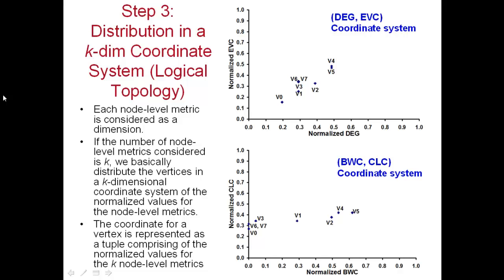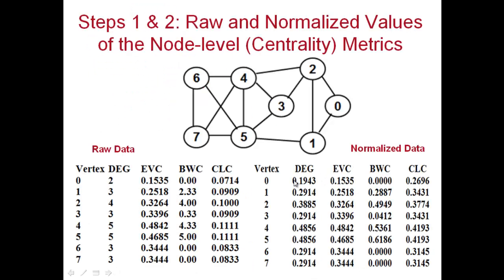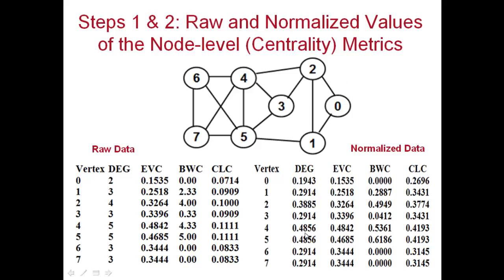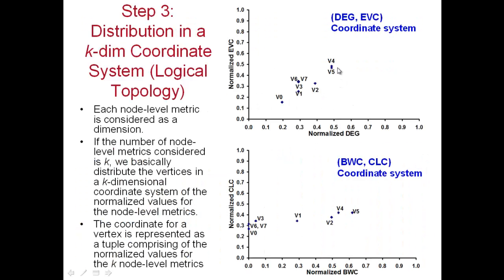The third step is to distribute the vertices in a coordinate system. If k equals 2 and the two metrics are degree and eigenvector centrality, you have a two-dimensional coordinate system with normalized values for degree and eigenvector centrality as the coordinate values. The coordinate values are always between 0 and 1 because you are using normalized data. For example, the coordinate for vertex 0 is close to 0.2 and 0.15, and for vertices 4 and 5 it is close to 0.5 and 0.5.